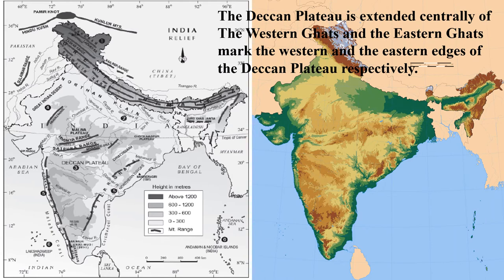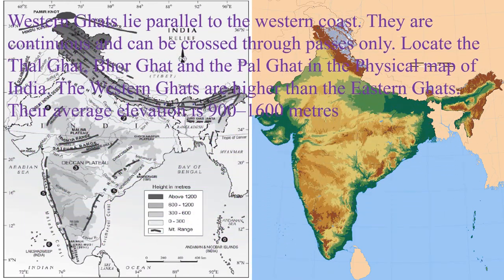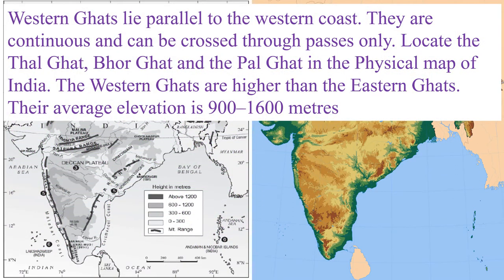The Deccan Plateau extends centrally between the Western Ghats and Eastern Ghats, which mark the western and eastern edges of the Deccan Plateau respectively, with the Satpura Ranges on the northern side. The Deccan Plateau is triangular in shape.